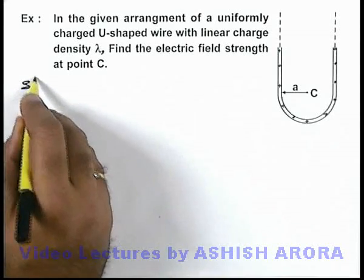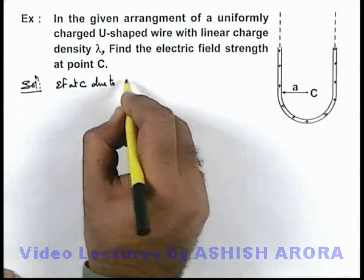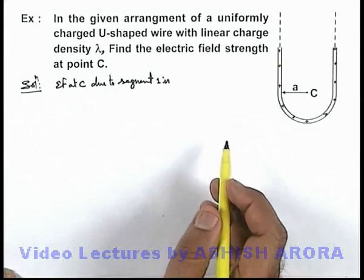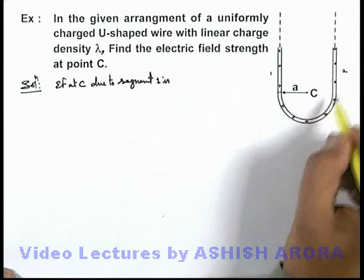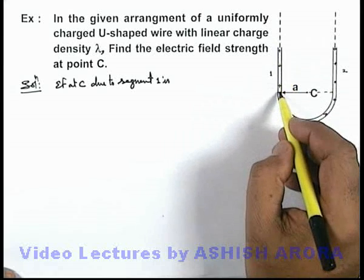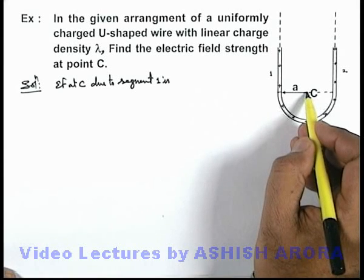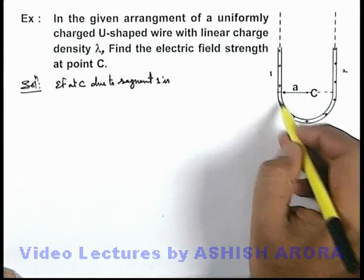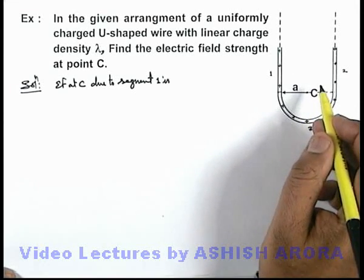For the solution, we can divide this wire into 3 segments. The 1st is a semi-infinite wire segment, the 2nd is another semi-infinite wire segment, and the 3rd is the semicircular segment. From segments 1 and 2, we find the electric field at a perpendicular distance 'a', and from segment 3 we find the field at the center of curvature of the semicircle. We then add all these results.